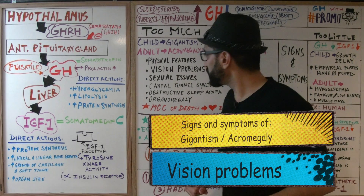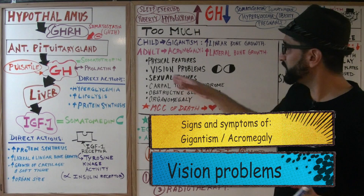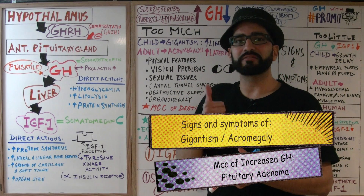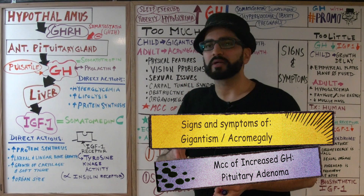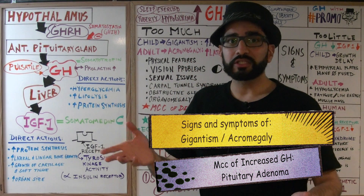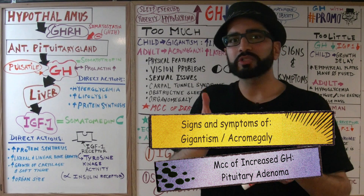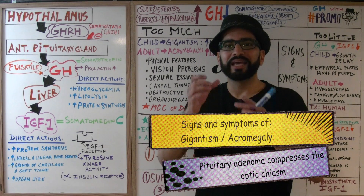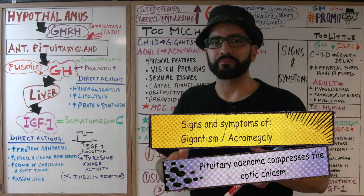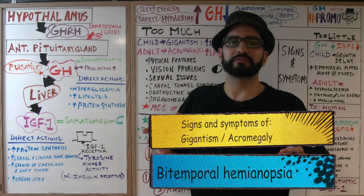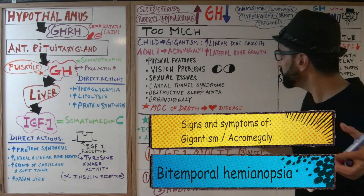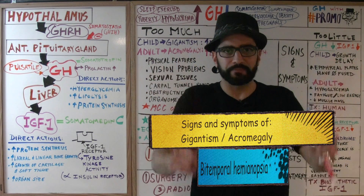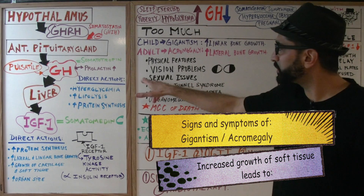Patients also present with vision problems. The most common cause of excess growth hormone is a pituitary adenoma — just like with excess prolactin. A pituitary adenoma compresses the optic chiasm, causing visual field defects — specifically bitemporal hemianopsia, where the patient cannot see properly in the temporal visual fields.